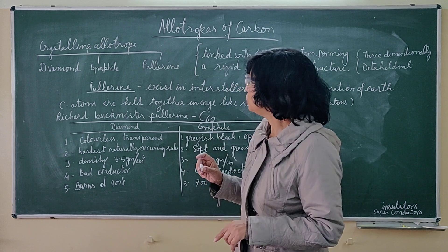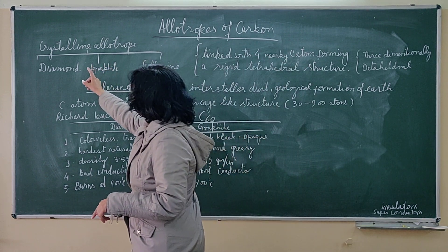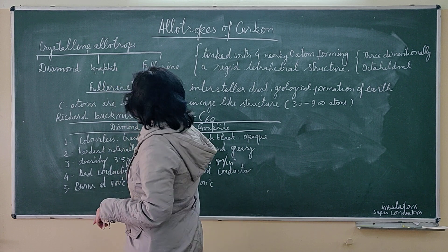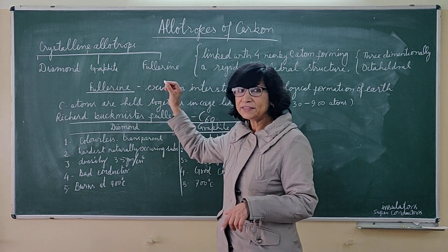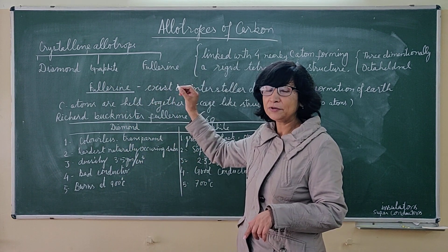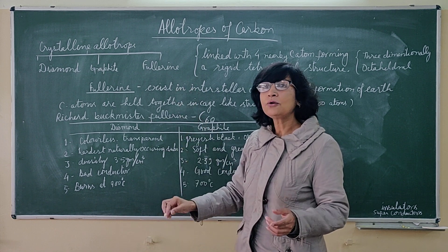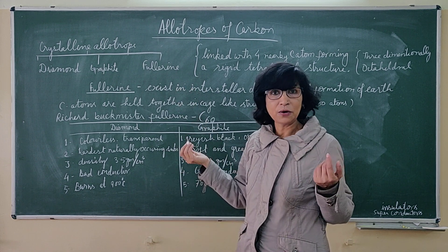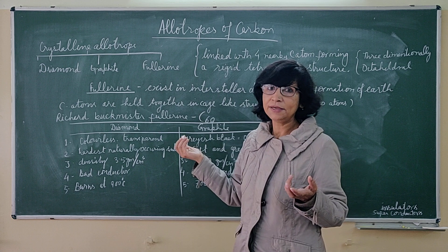So let us look at these three crystalline allotropes of carbon: diamond, graphite, and fullerenes. As we discussed, fullerenes may be a new term to you because fullerenes were not known to mankind for very long — it is a recent discovery.